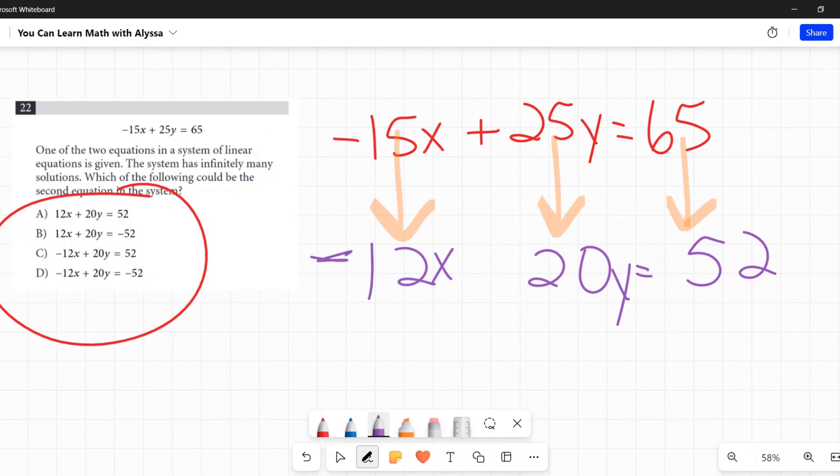Negative 15x, so that needs to be a negative. Positive 25, that needs to be a positive. Positive 65, so that needs to be a positive. Negative 12x plus 20y equals 52. And that is C, there's my answer.